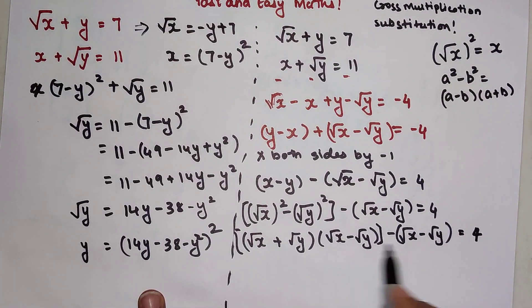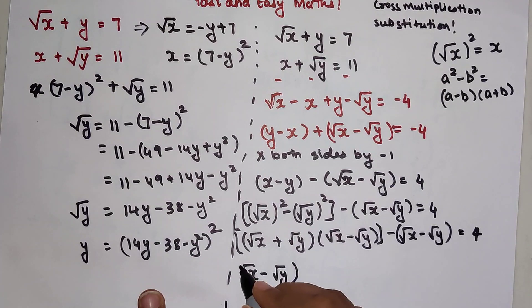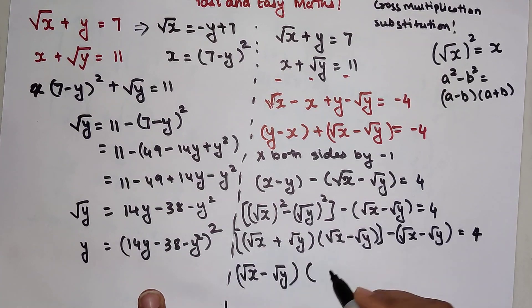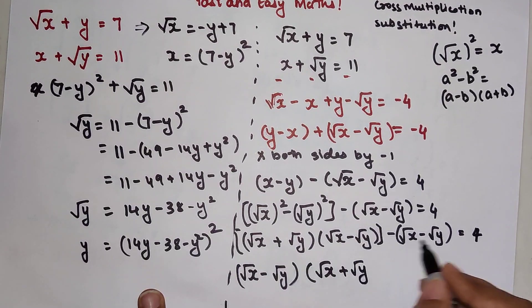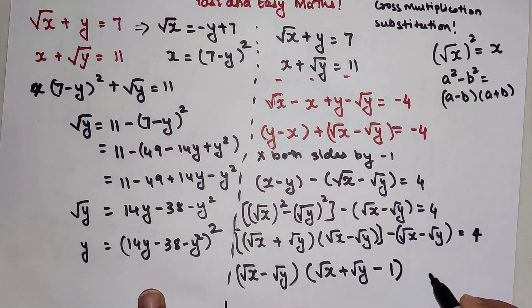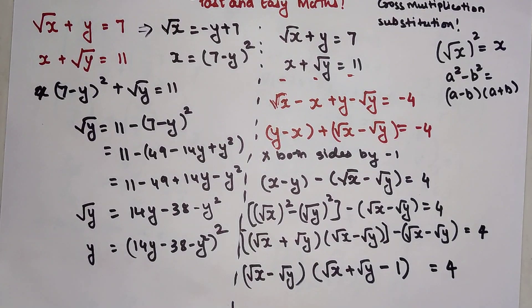I can take root x minus root y common, and the next bracket will be root x plus root y minus 1. This equals to 4. I hope you all have understood till here.